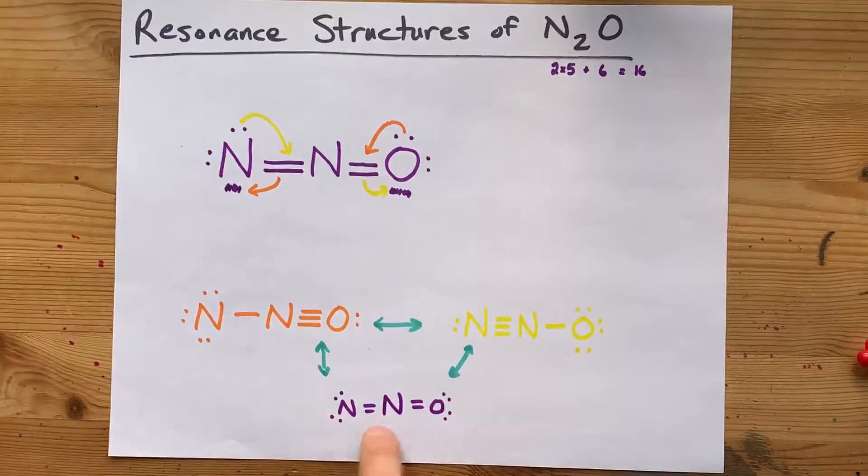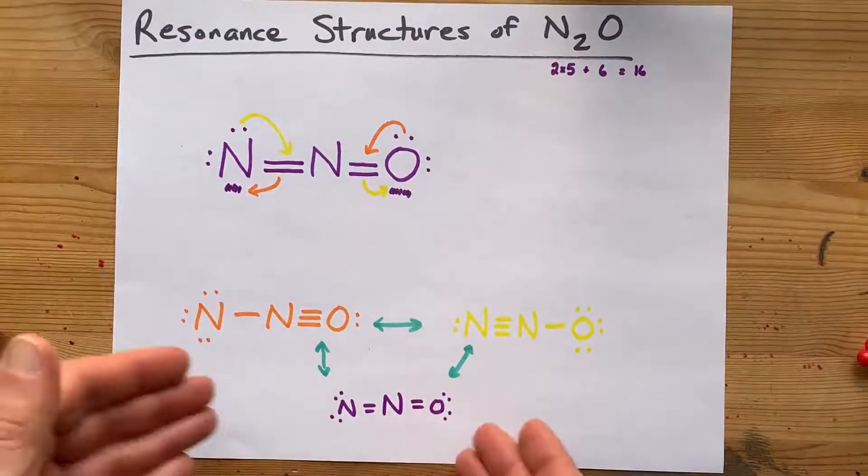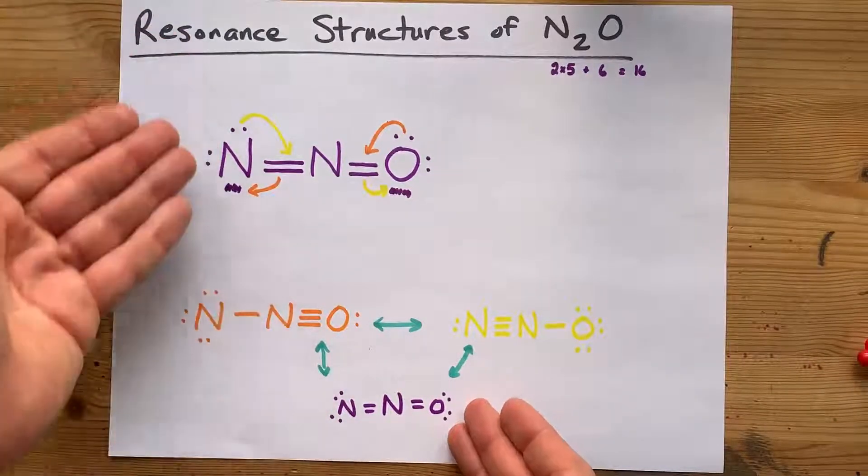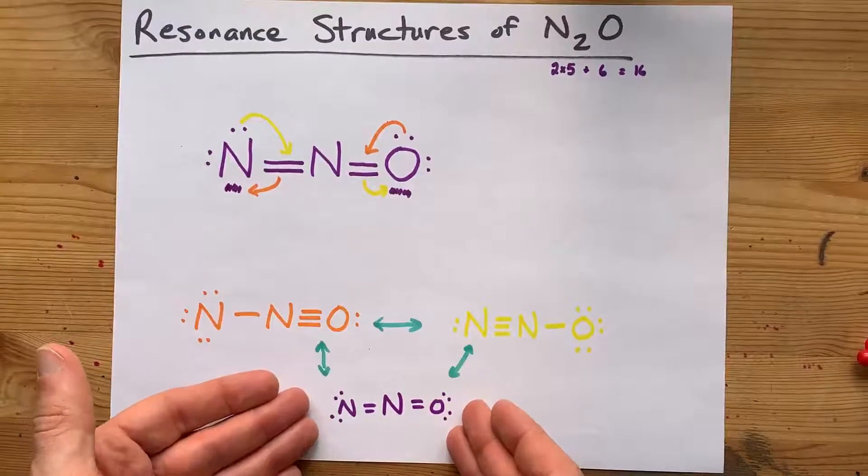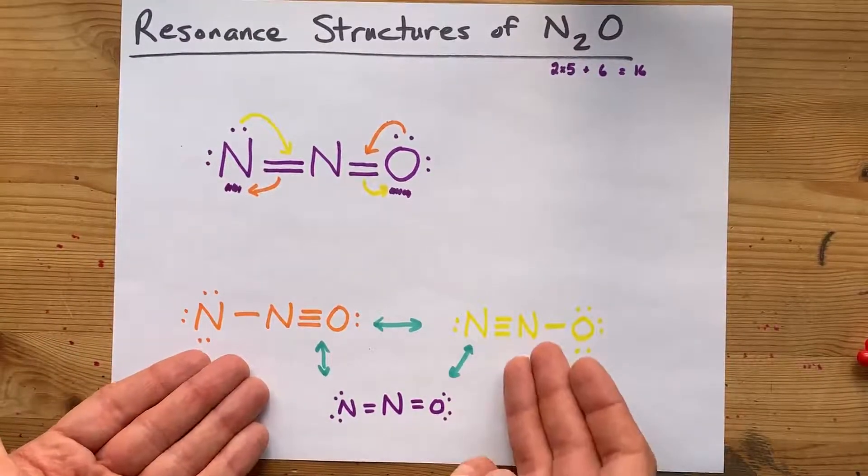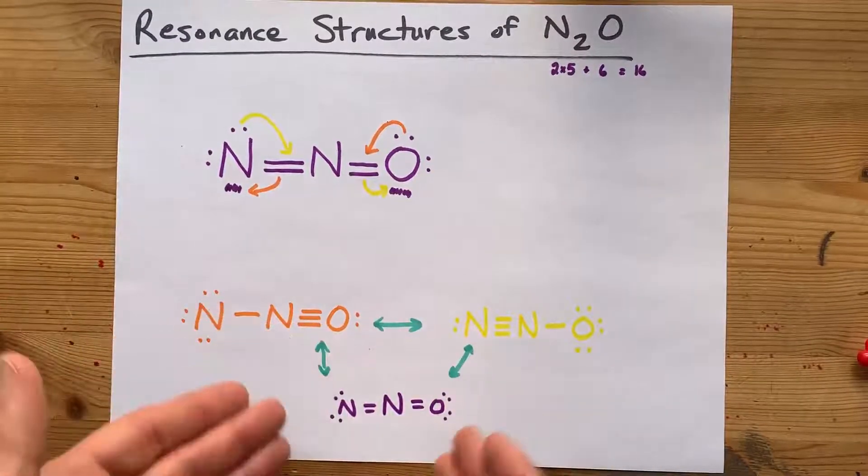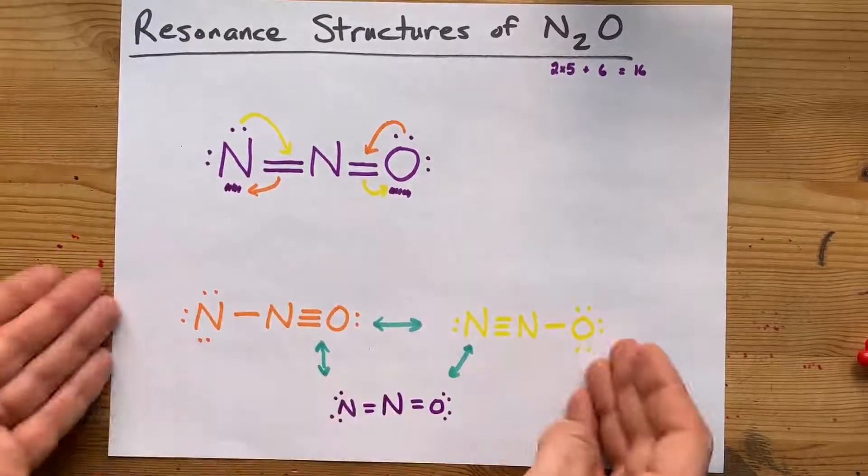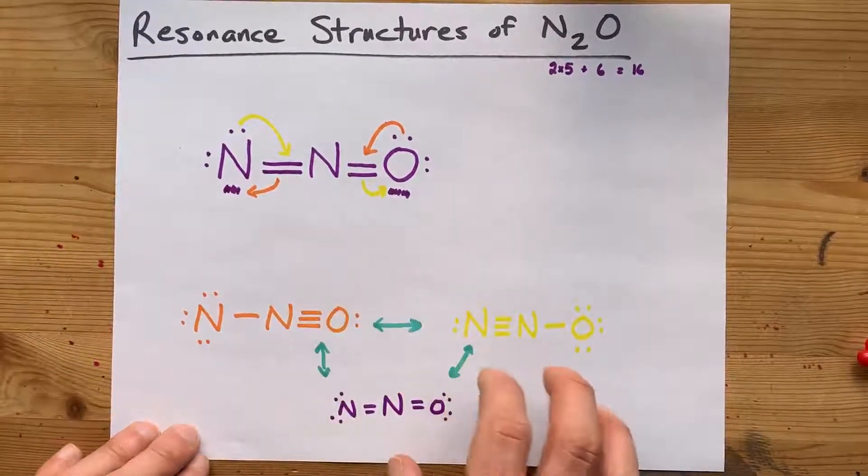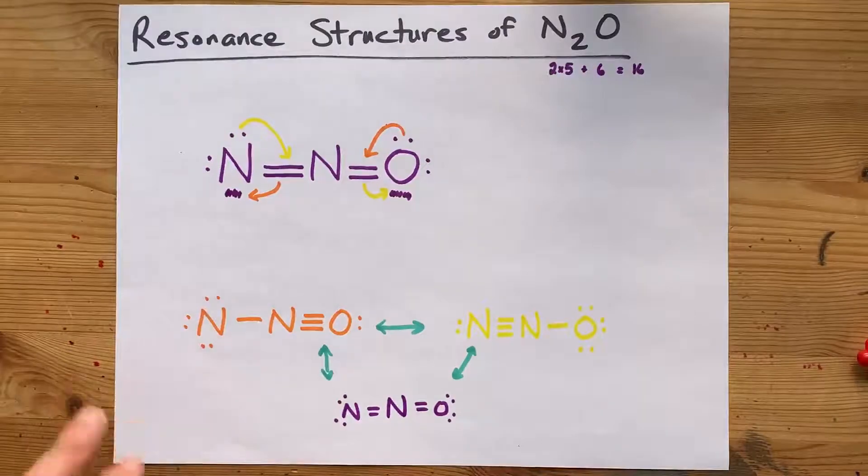My real guess is that this is the Lewis structure most teachers expect when they ask you to draw the Lewis structure for N2O. But because these two are valid, they count as resonance structures. Cool! There's your three resonance structures. You're welcome, and best of luck.